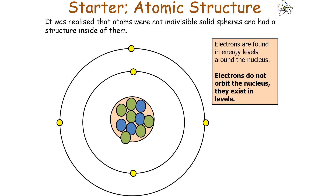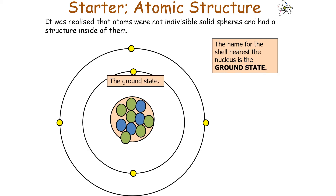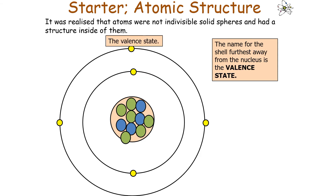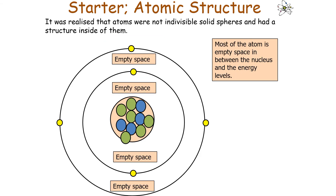Electrons don't orbit the nucleus; rather they exist in energy levels. Different names used across science for energy levels include states, orbitals, or shells. The shell nearest the nucleus is called the ground state, and the shell furthest away is called the valence state. Most of the atom is in fact empty space between the nucleus and the energy levels. The radius of the nucleus is about 10,000 times smaller than the radius of the atom.